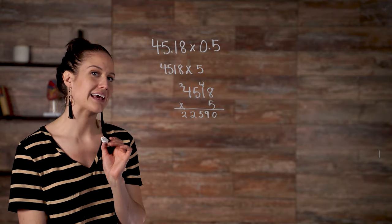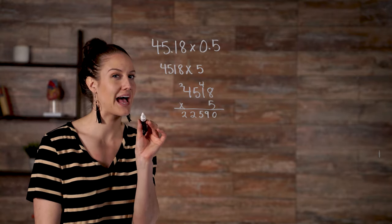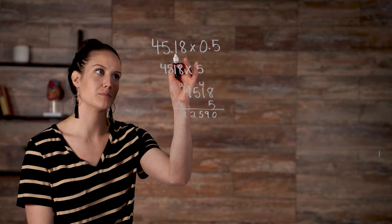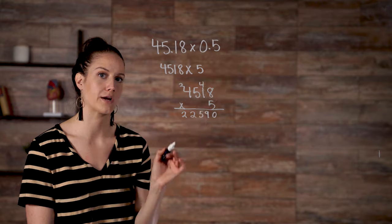Go back to the original equation and count how many numbers are behind each decimal point. In this case, there are three. Two here and then one here.